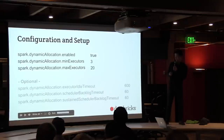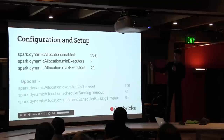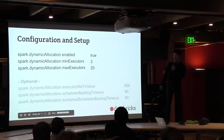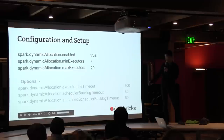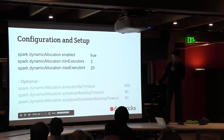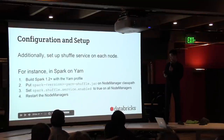Using this is actually fairly straightforward. There are only three required parameters: you need to enable it, then set the lower and upper bounds. Additionally, there are three optional parameters that control how quickly you remove executors and how quickly you add them. You also need to set up the shuffle service for YARN, which involves starting the node managers with the YARN shuffle service.